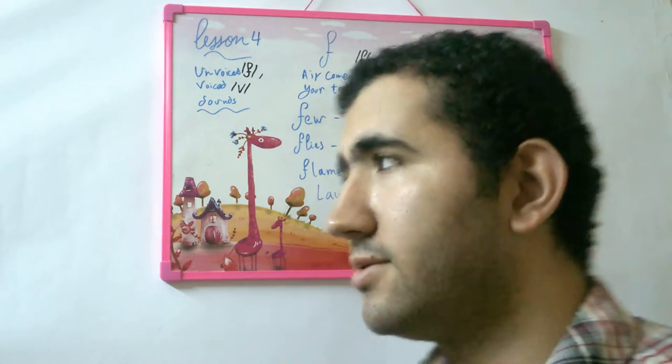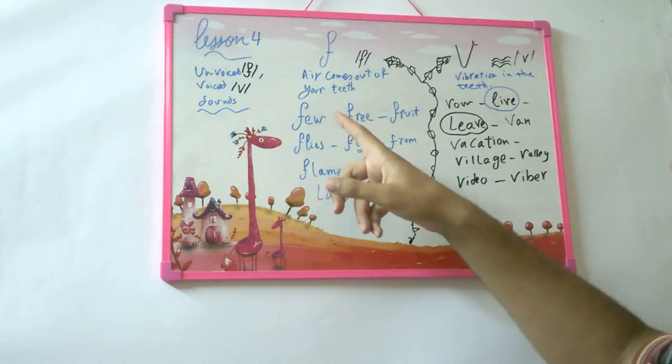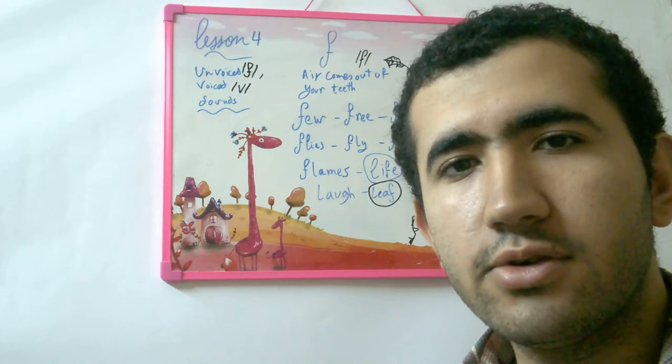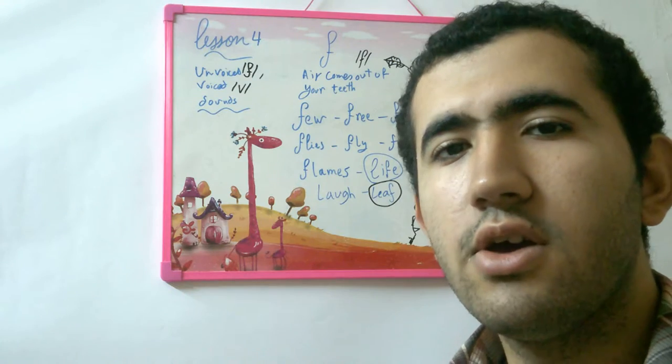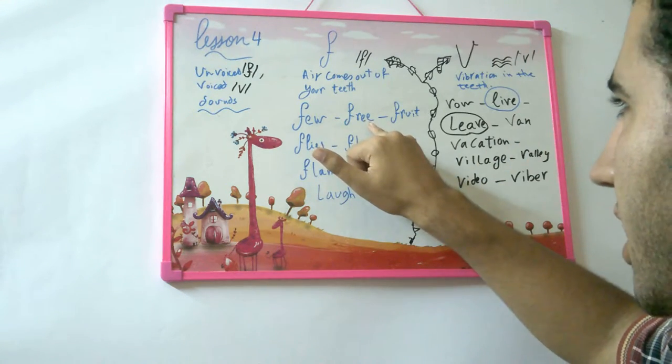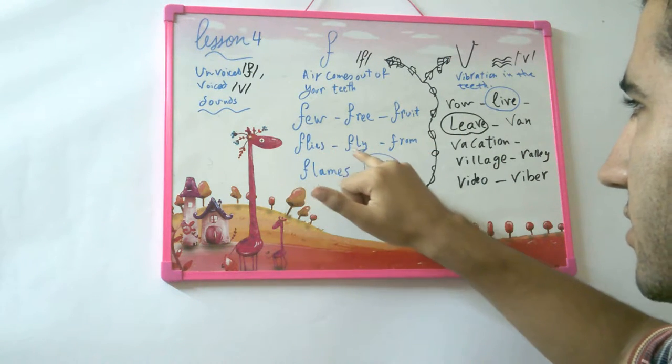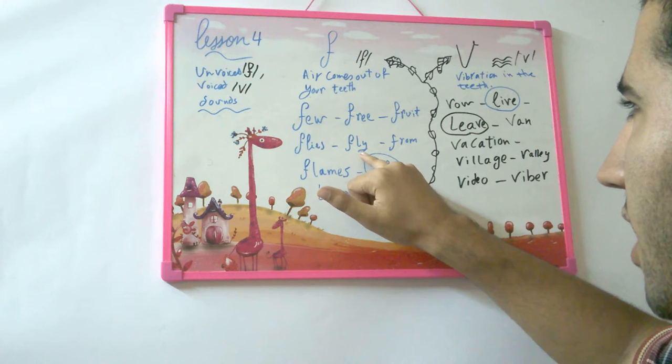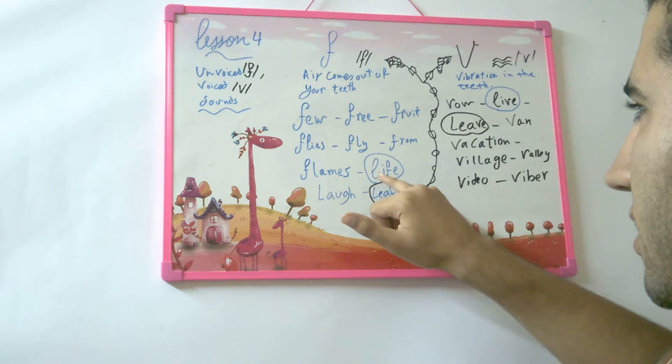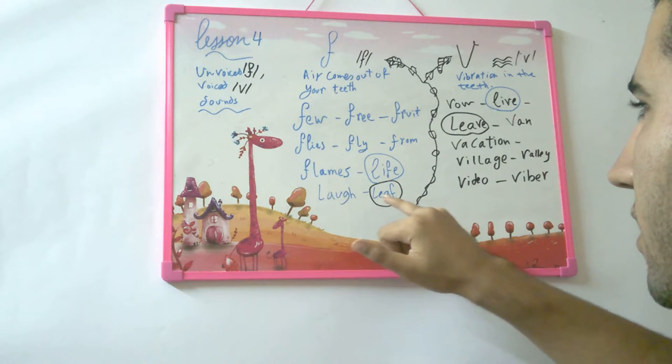Let's look at the examples. So the F sound - air comes out of your mouth. Few. Say the sound first before you say the word to feel the sound. Few. Free. Fruit. Flies. Fly. From. Flames. Life. Laugh. Leaf.